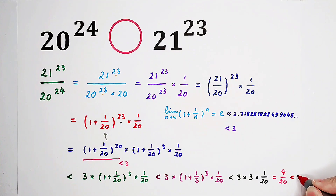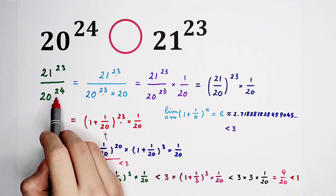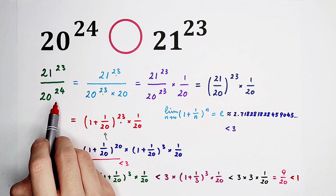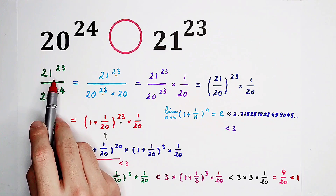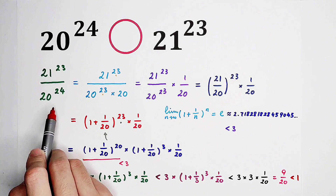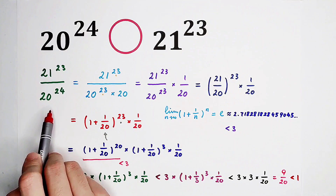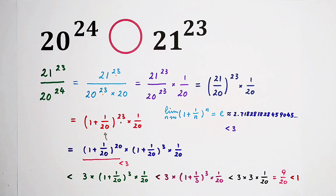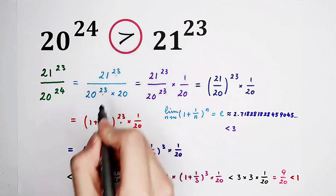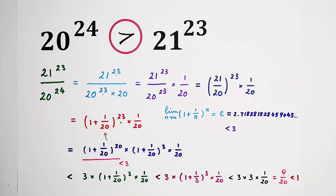So this ratio is smaller than 1. That means 21 to the power of 23 is smaller than 20 to the power of 24. So which is greater? Of course, 20 to the power of 24 is greater. Did you get it? Give me a thumbs up for more interesting questions, and we'll see you next time. Bye-bye!